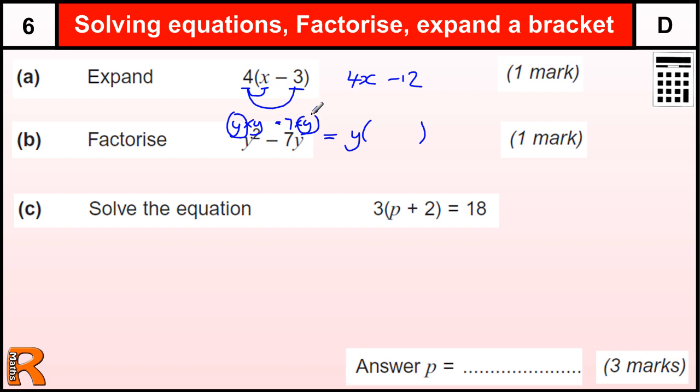So the thing that we have in both—we have a y in both—so we factorize out the y, and in the bracket what's left is the y and the minus 7.